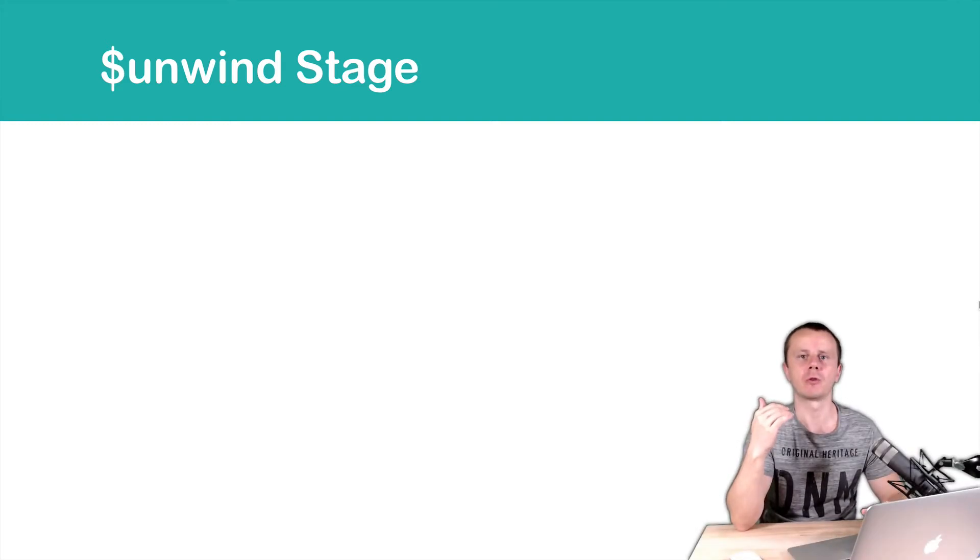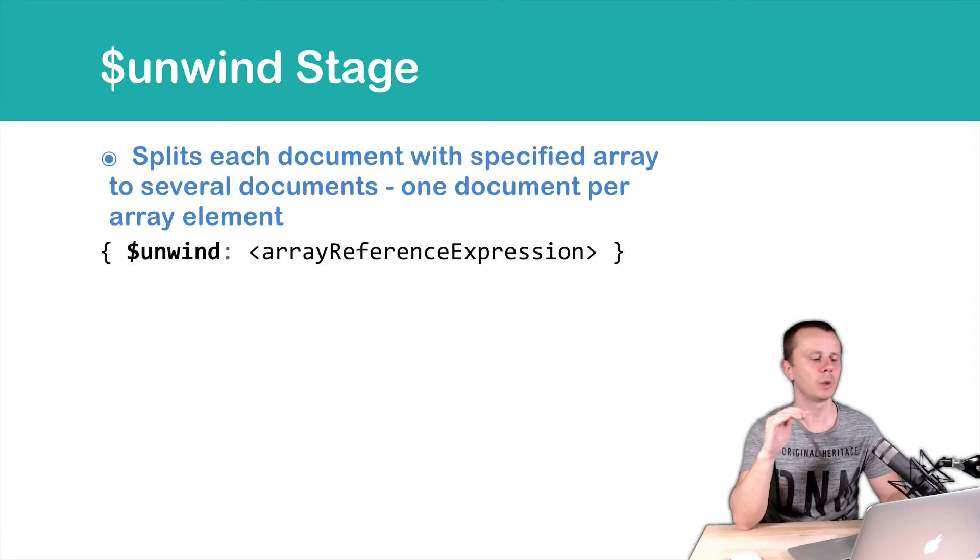Unwind stage helps to perform aggregation operations on the array fields. Let's look at a syntax. Unwind, then column, and then array reference expression.